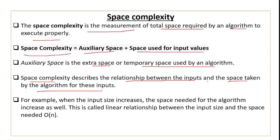If there are more input values then obviously more space will be occupied; if the number of input values is less then space will also be less. Space complexity tells you about the input values and the space taken by them. When the number of inputs increases, the space needed for the algorithm increases as well — this is called a linear relationship between input size and the space needed.